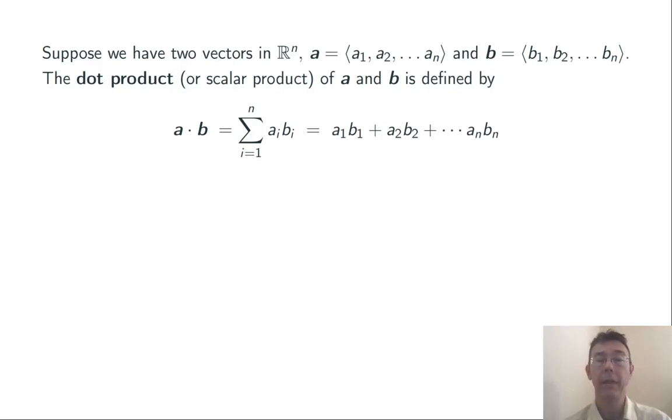The dot product of A and B, written A dot B, is A1B1 plus A2B2, and so on. So you're multiplying the corresponding components of the vectors, and then adding up all those results.